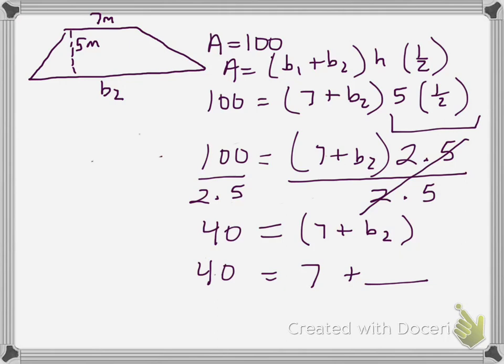So, once you get to this point, you could even do a little bit of a guess and check sort of method to figure out that that's going to be 33. In the end, we have now that base 2 is equal to 33 meters.